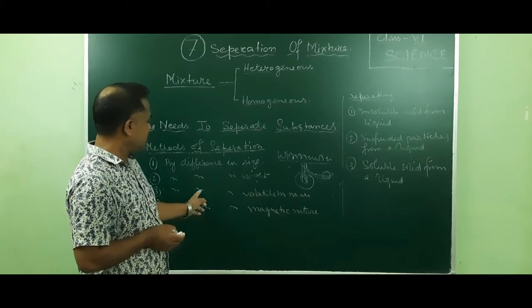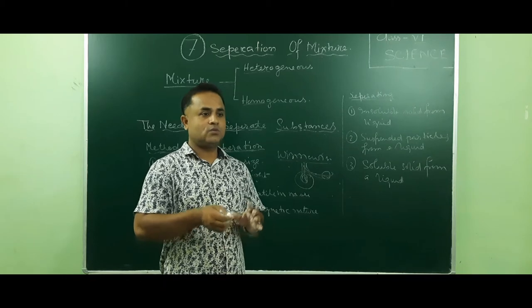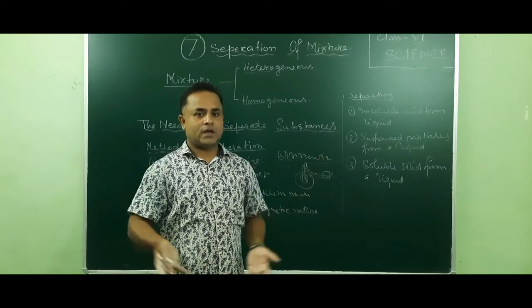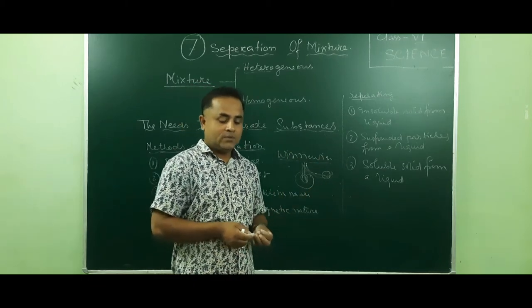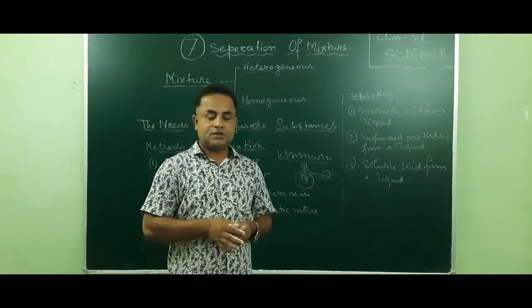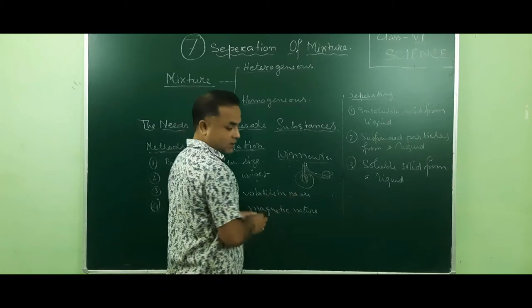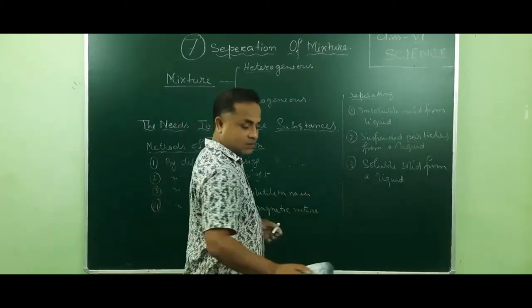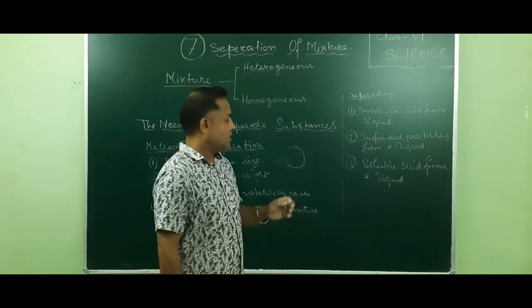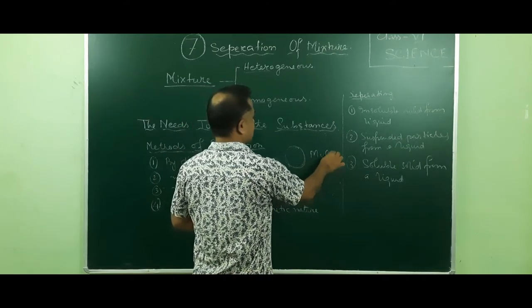Number three method: by difference in volatile nature. Volatile in nature means it surrenders quickly to the outer atmosphere — these solid particles change into gas directly from the solid substance. Such a substance is called a sublime. For example, ammonium chloride is a sublime substance. When you expose it to sunlight or heat, it changes into gas.